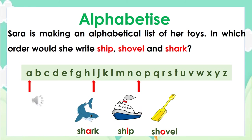Sarah is making an alphabetical list of her toys. In which order would she write ship, shovel, and shark? By following rule number three and looking at the third letter, we would get shark, ship, and shovel in alphabetical order.